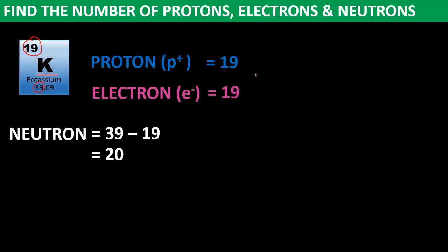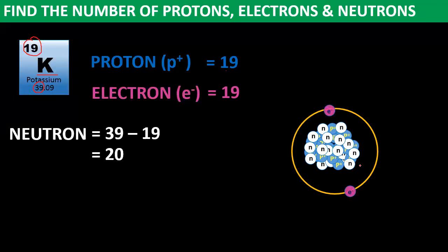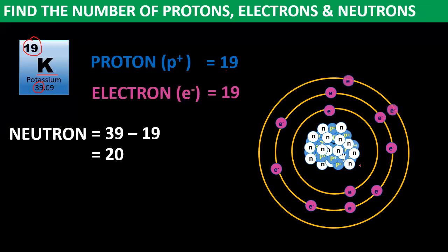So for every atom of potassium, we have 19 protons, 19 electrons, and 20 neutrons. Here is its structure: 19 protons and 20 neutrons are in the nucleus. For the 19 electrons — the first energy level holds 2. The second energy level holds a maximum of 8. So 2 plus 8 equals 10, with 9 electrons remaining. Those 9 electrons go into the third energy level.